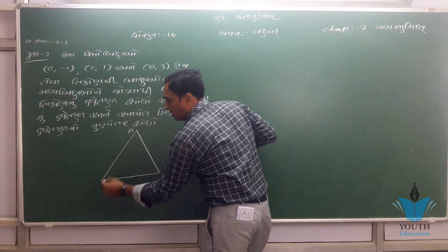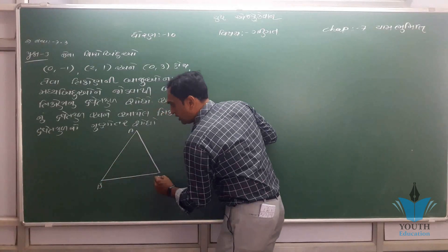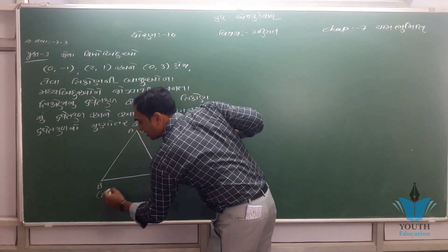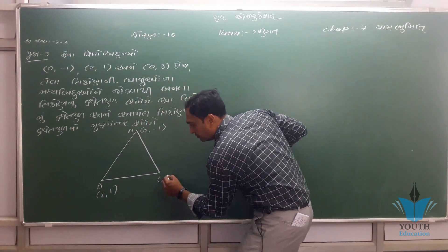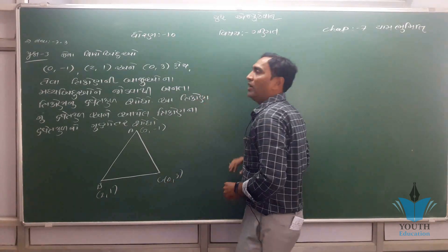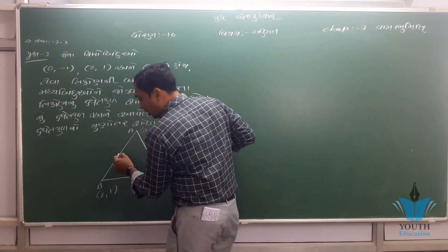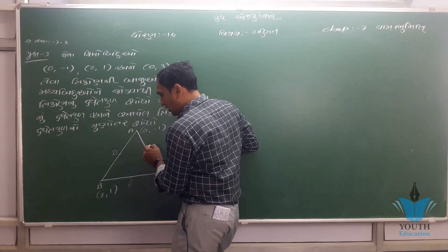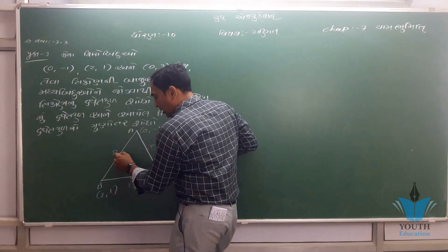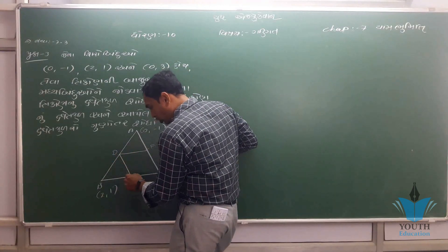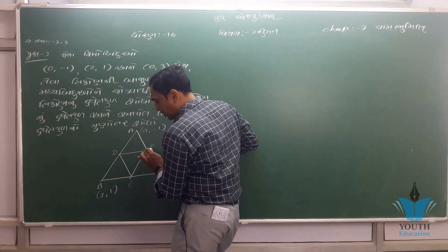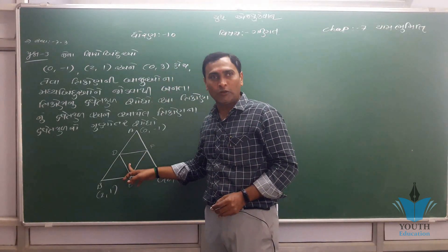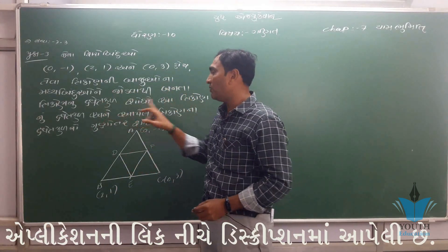A, B, C. A, B, C. 0, minus 1. B, C. 0, 3. 0, 3. 0, 3. 0, 4. 0, 4.